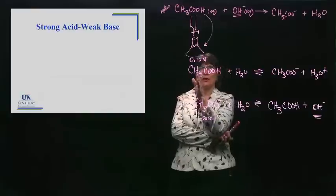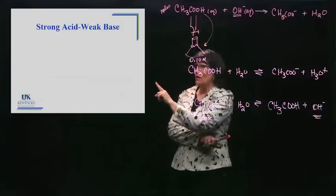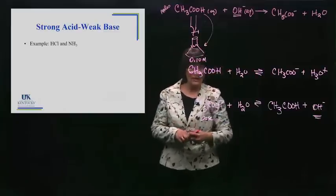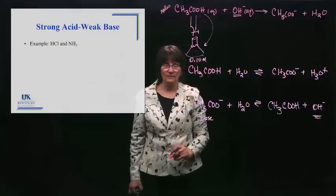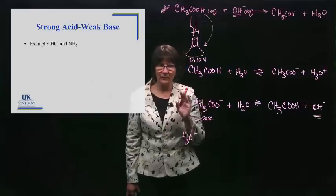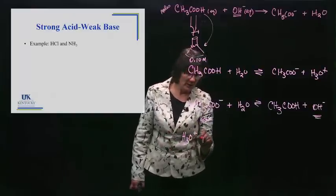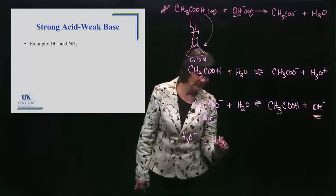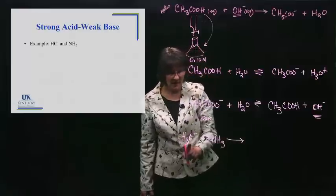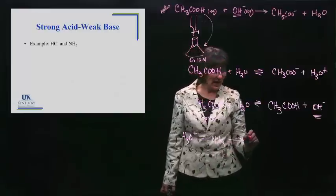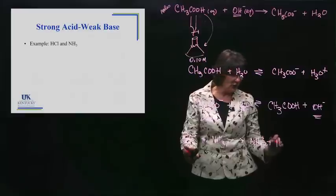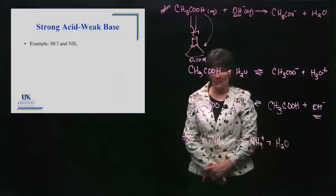Now let's consider the opposite scenario. This was a weak acid and a strong base. Let's do a strong acid and a weak base. For the strong acid, HCl, we write H₃O⁺ — the Cl⁻ is a spectator. For the weak base, write it in full. The strong guy pushes it to completion. We do a proton swap: the H₃O⁺ donates, leaving NH₄⁺ when the base receives it, and H₂O when it donated.